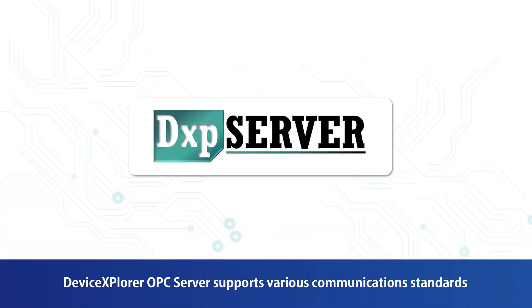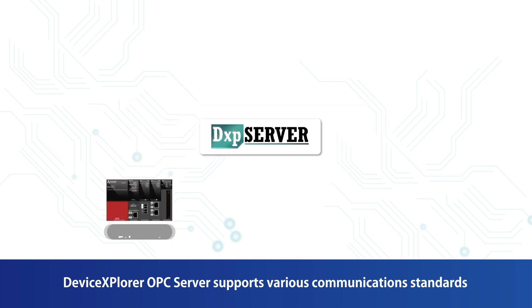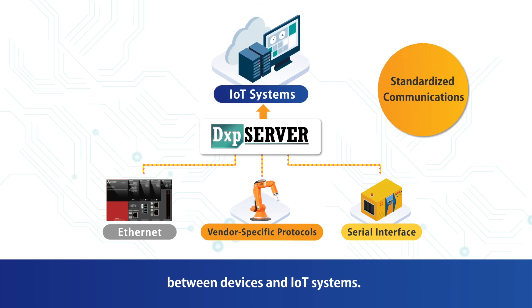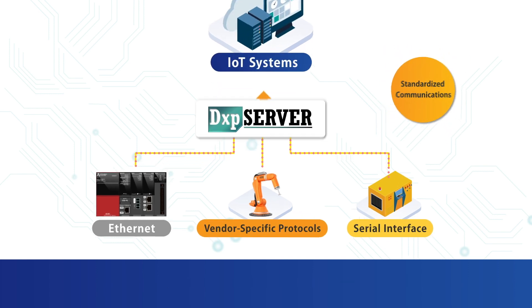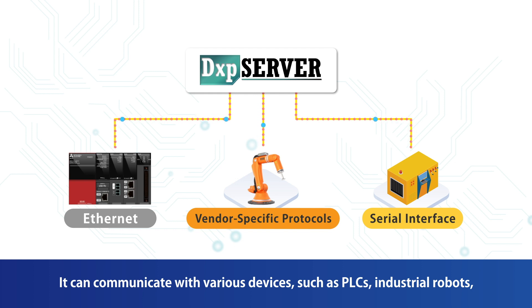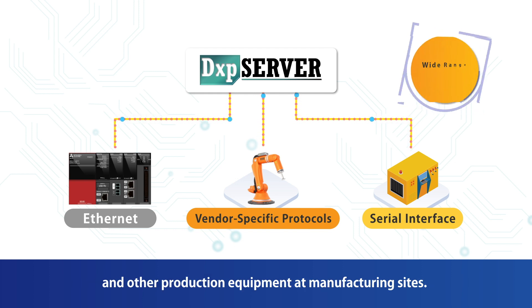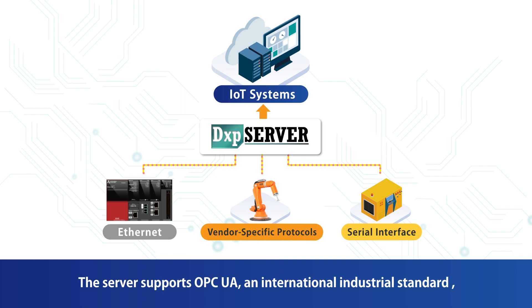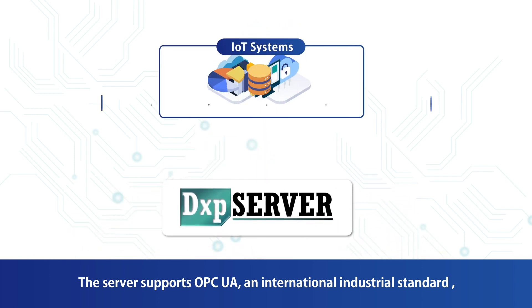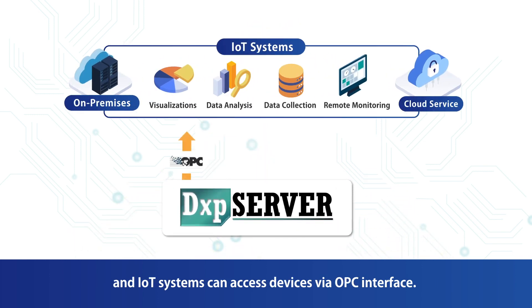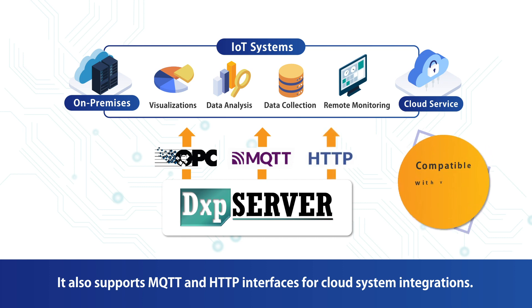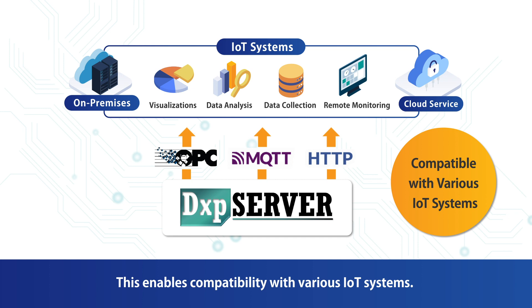Device Explorer OPC Server supports various communication standards and physical interfaces to standardize communication between devices and IoT systems. It can communicate with various devices such as PLCs, industrial robots, and other production equipment at manufacturing sites. The server supports OPC UA, an international industrial standard, and IoT systems can access devices via OPC interface. It also supports MQTT and HTTP interfaces for cloud system integrations, enabling compatibility with various IoT systems.